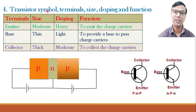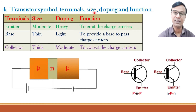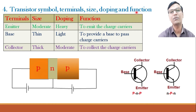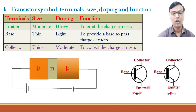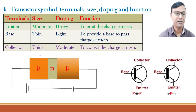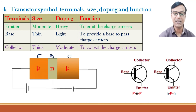Now let us look at the different symbols of transistors, terminals of transistors, size of different layers of a transistor, doping of different layers, and function of these different layers. Starting with the symbol: for every transistor there are three terminals — emitter, base, and collector. So this one is your emitter E, this one is your base B, and this one is your collector C.